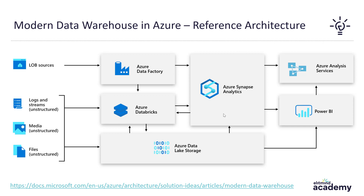Let's step into the modern data warehouse in Azure reference architecture. It's built on top of several blocks. Starting from the left side, every company has different systems that support operational work — ERP systems, CRM systems, as well as a number of databases and files. You would want to integrate this data into a single version of truth. That's the number one purpose of a data warehouse: to integrate data into a single database that will serve a normalized version of business entities to business intelligence tools.